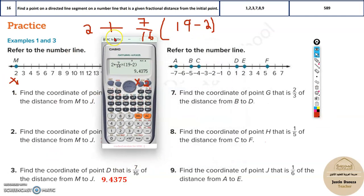Now let's do a problem from the right side. Find the coordinates of point G. The fractional distance is given - that is 2 by 3 of the distance from B to D. B and D are mentioned. B is the initial point - that's minus 5. D is 1.